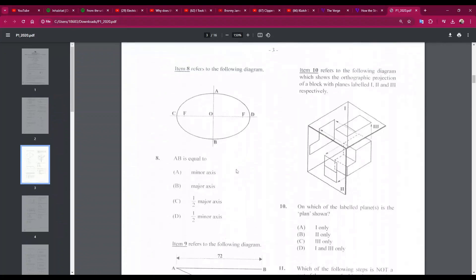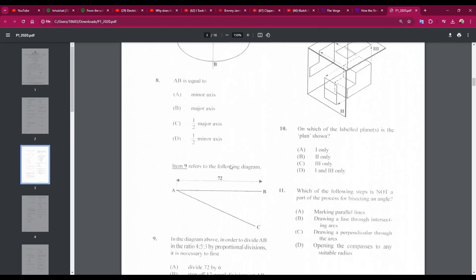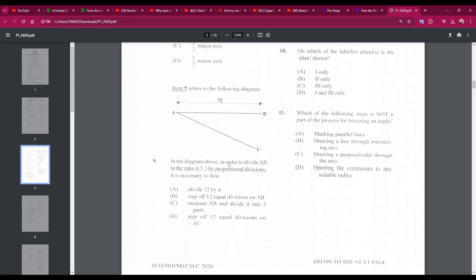Number eight: AB, this is AB here, AB is equal to the minor axis. So that's A. Number nine: in the diagram above, in order to divide AB, that's this line, in the ratio of four to five to three by proportional divisions, it is necessary to first... step off 12 equal divisions on AC. So what you do is you add up the ratio: four plus five is nine, and three is twelve. So there are twelve parts. And line AC, what we'll do is divide line AC into 12 equal divisions and then proceed. So the answer is D, step off 12 equal divisions on AC.